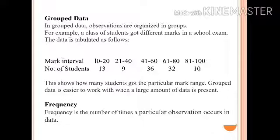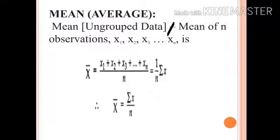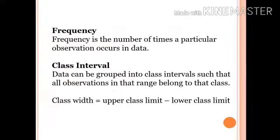Frequency is the number of times a particular observation occurs in the data. Average, that is x bar, equals sum of total observation upon number of observation. So x bar equals to sigma xi upon n. Class interval: Data can be grouped into class intervals such that all the observations in that range belong to that class. Class width equals upper class limit minus lower class limit.